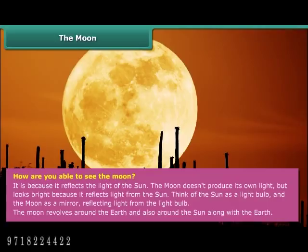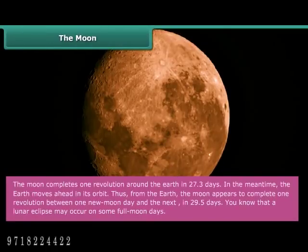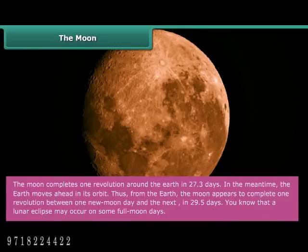The Moon revolves around the Earth and also around the Sun along with the Earth. The Moon completes one revolution around the Earth in 27.3 days. In the meantime, the Earth moves ahead in its orbit. Thus, from the Earth, the Moon appears to complete one revolution between one Moon day and the next in 29.5 days. A lunar eclipse may occur on some full Moon days.